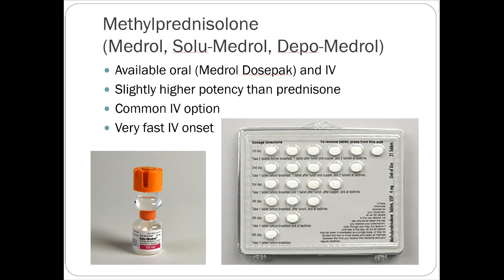Methylprednisolone (Solu-Medrol) is one of the more common IV options — decent potency, slightly higher than prednisone. For an asthma exacerbation, you might use 40–60 mg once daily of prednisone, but IV methylprednisolone's first dose might be 125 mg. For an asthma exacerbation or anaphylactic reaction, 125 mg of Solu-Medrol is a really common starting aggressive IV steroid dose — works very fast. It's a great drug to have for anything immune-related, especially in emergency medicine or urgent care.